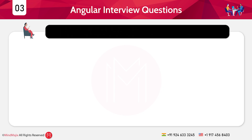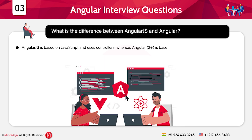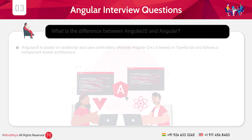The third question: What is the difference between AngularJS and Angular? This might feel a little weird, but there is a slight difference. This can also be a tricky question to test your knowledge. The answer is really simple: AngularJS is based on JavaScript and uses controllers, whereas Angular 2+ is based on TypeScript and follows component-based architecture. Also try to mention '2 plus' when referencing the modern version.